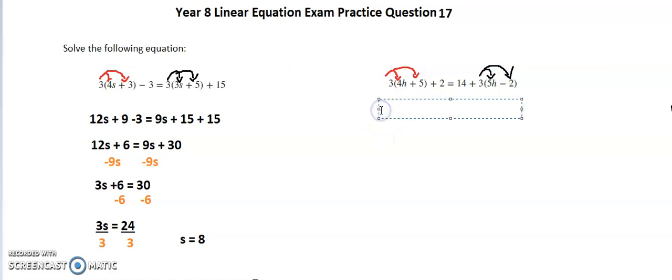That gives us 3 times 4h is 12h, and 3 times 5 is 15, and I've got plus 2 here. That's equal to 14, and then I've got my other bracket: 3 times 5h is 15h, and 3 times negative 2 is negative 6. Don't forget that it's a negative 2 there.